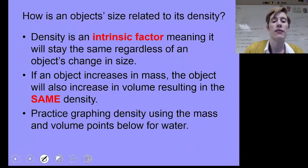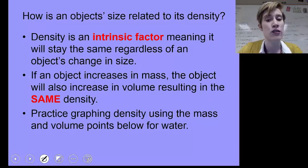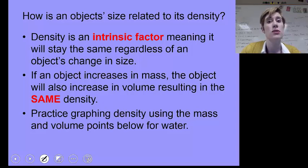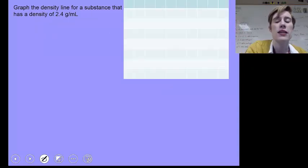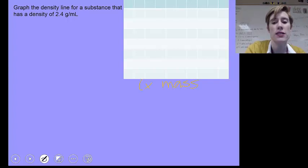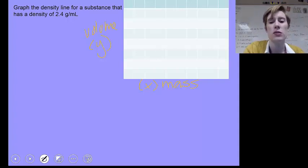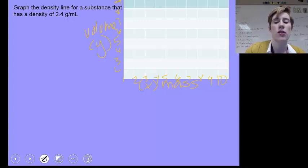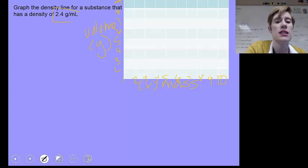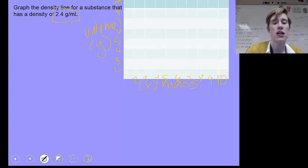Now I want to show you guys how we graph density. Density is called an intrinsic factor or an intensive property, meaning it stays the same regardless of the object's change in size. If the object increases in mass, the object will also increase in its volume, resulting in the same density. So let's practice graphing density. A density graph has mass and volume, and so we're going to show mass as our X, and we're going to show volume as our Y. And to make this really easy, let's just do... So that's our graph, volume over mass. Volume is always going to be our Y, and mass is always going to be our X. And we want to graph the density line for a substance that has a density of 2.4.